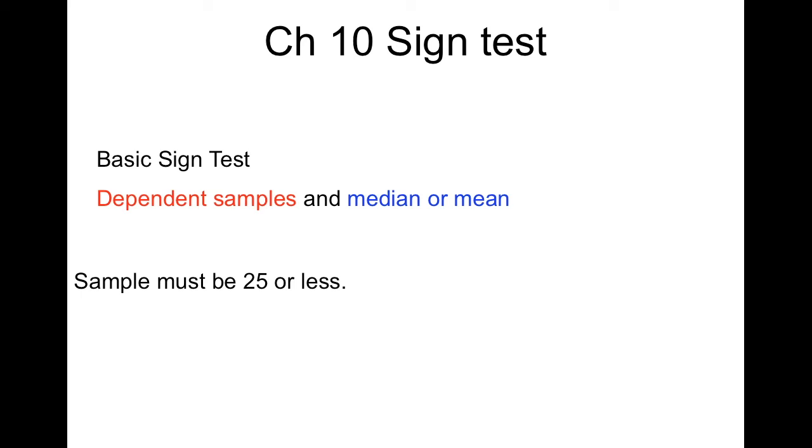The sample, again, the rule has to be 25 or less. A lot of this is going to be exactly the same as the dependent sample test.